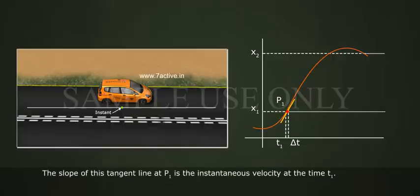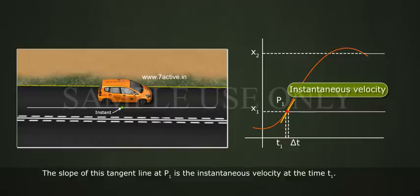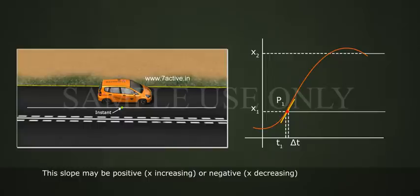The slope of this tangent line at p1 is the instantaneous velocity at the time t1. This slope may be positive, x increasing, or negative, x decreasing.